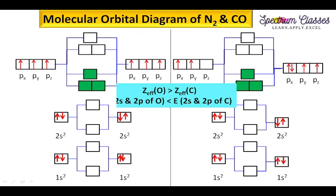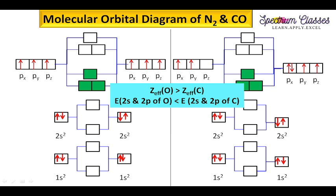The reason behind this difference is that the effective nuclear charge for the oxygen atom is greater compared to the effective nuclear charge for carbon. I have made a separate video on effective nuclear charge and its calculation — I will give you the link in the description box.